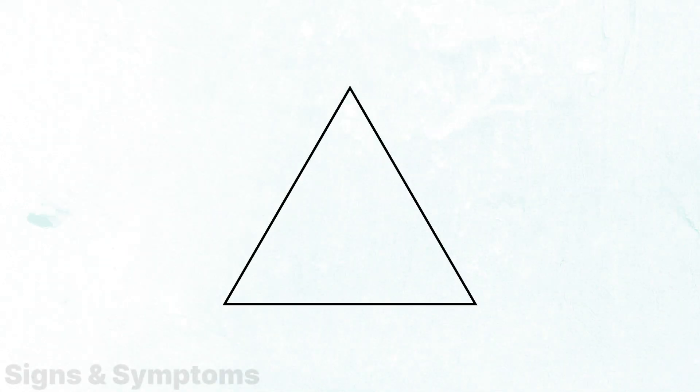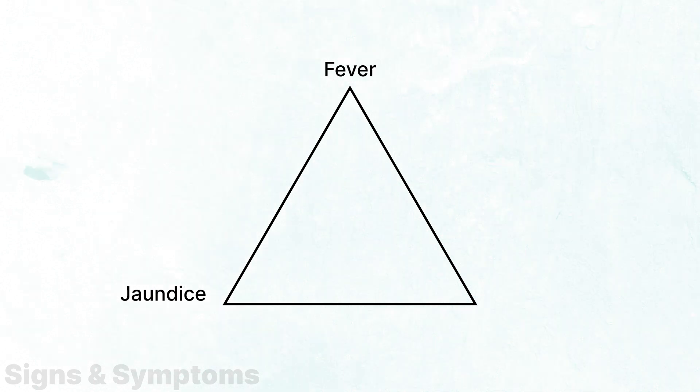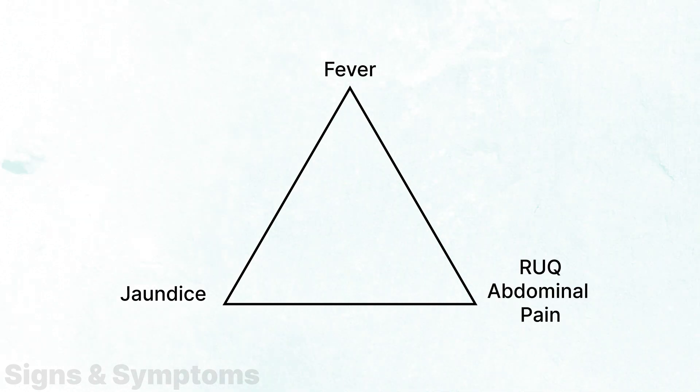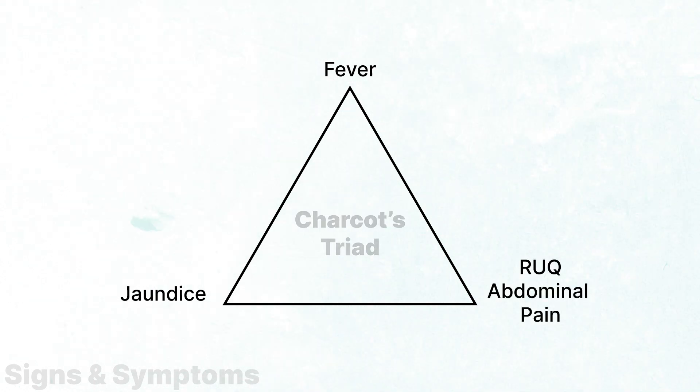Patients with cholangitis often present classically with a triad of symptoms including fever, jaundice, and right upper quadrant abdominal pain, often referred to as Charcot's triad.